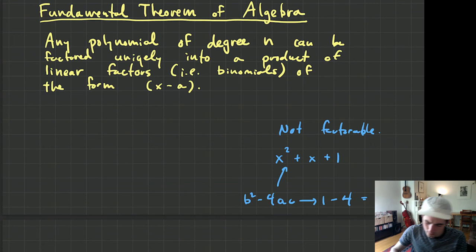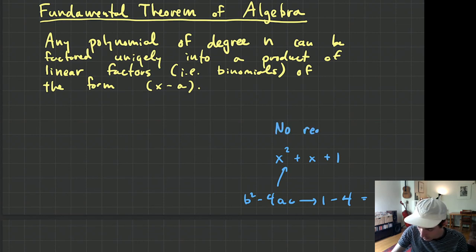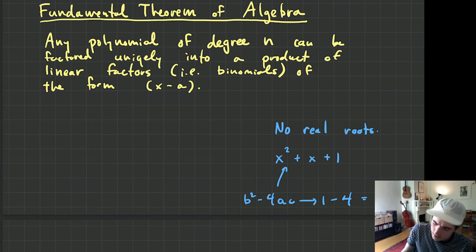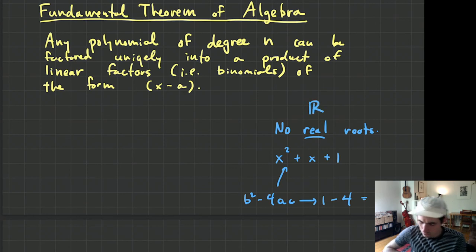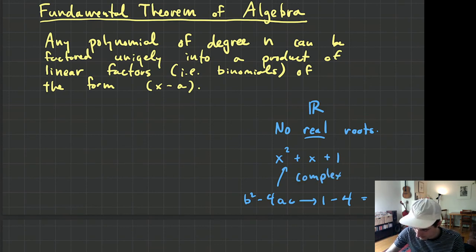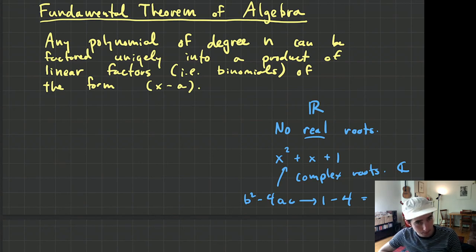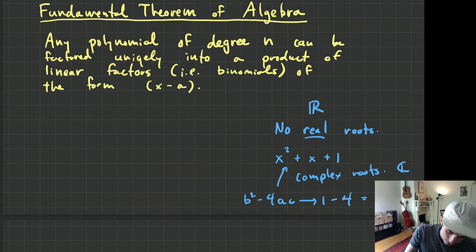Remember when we can't factor something, what that actually means is there are no real roots. That's what we were saying — there are no real roots to this polynomial. Key word being real, as in the roots are not real numbers. There are complex roots — complex as in the complex numbers.